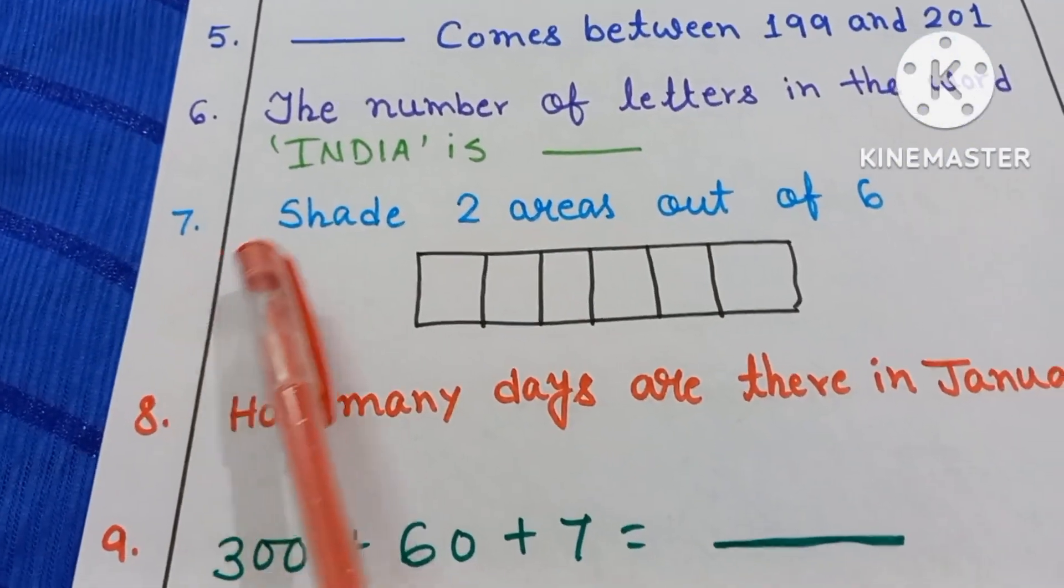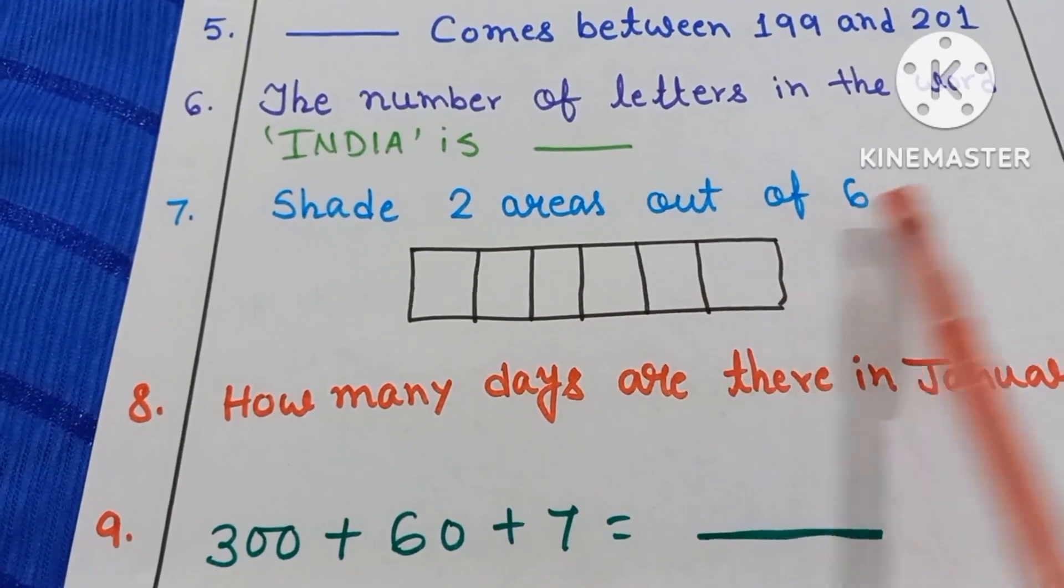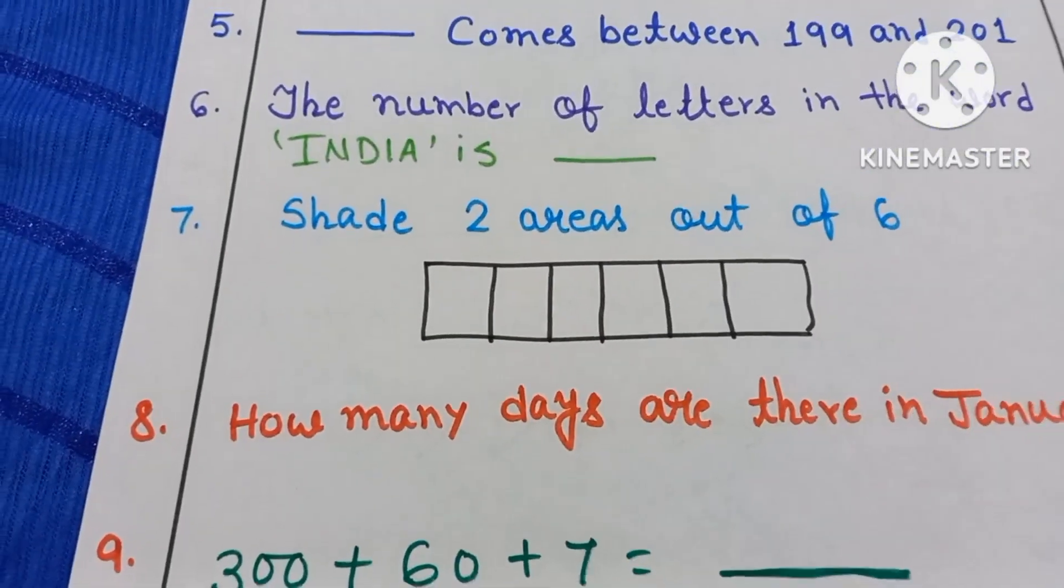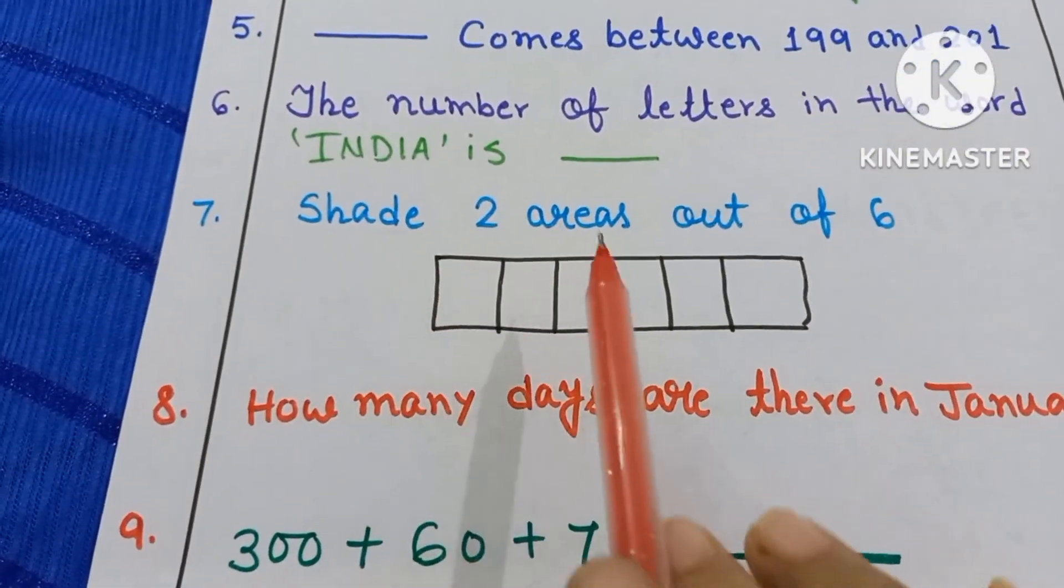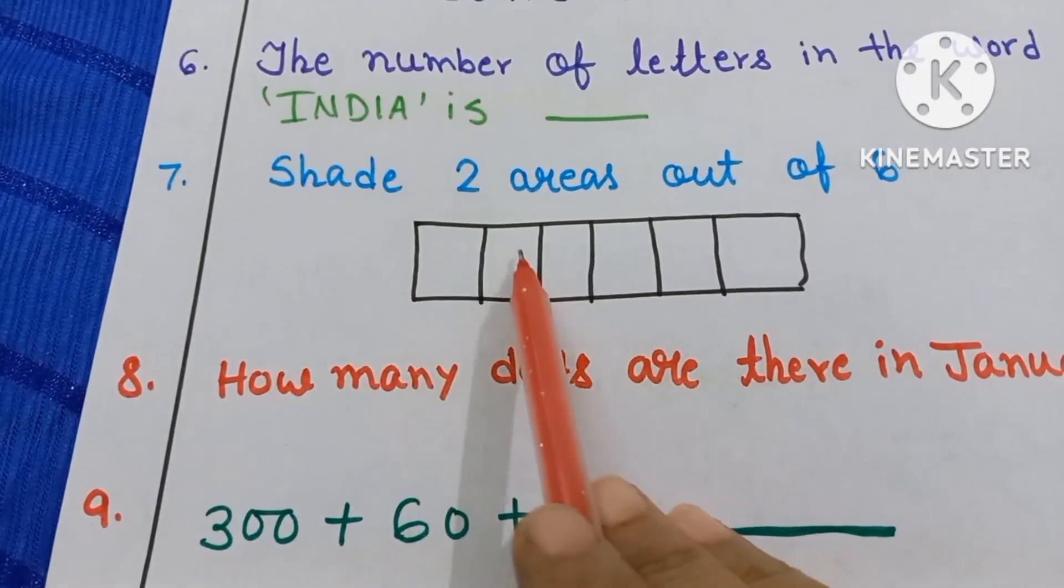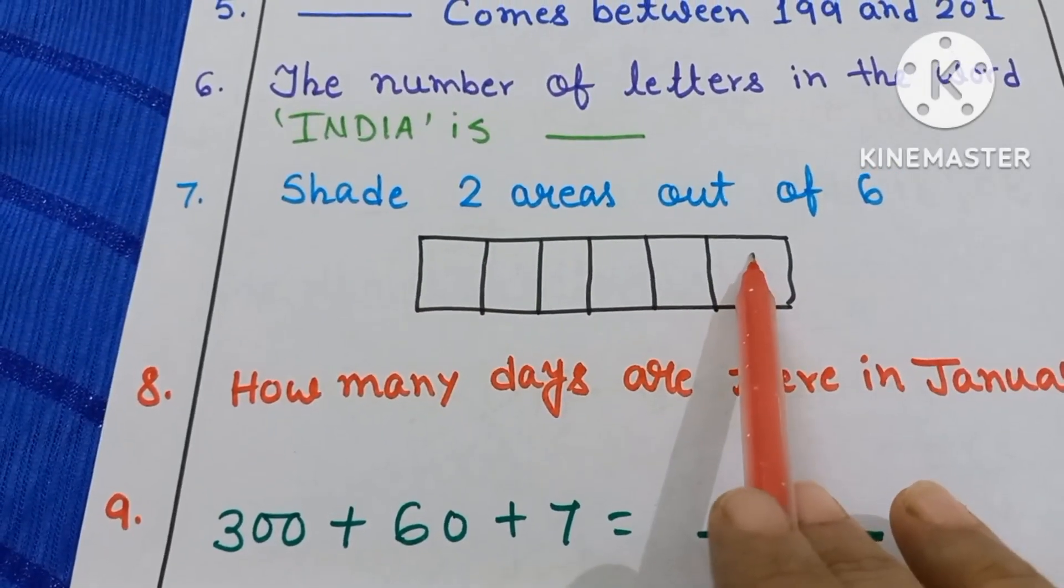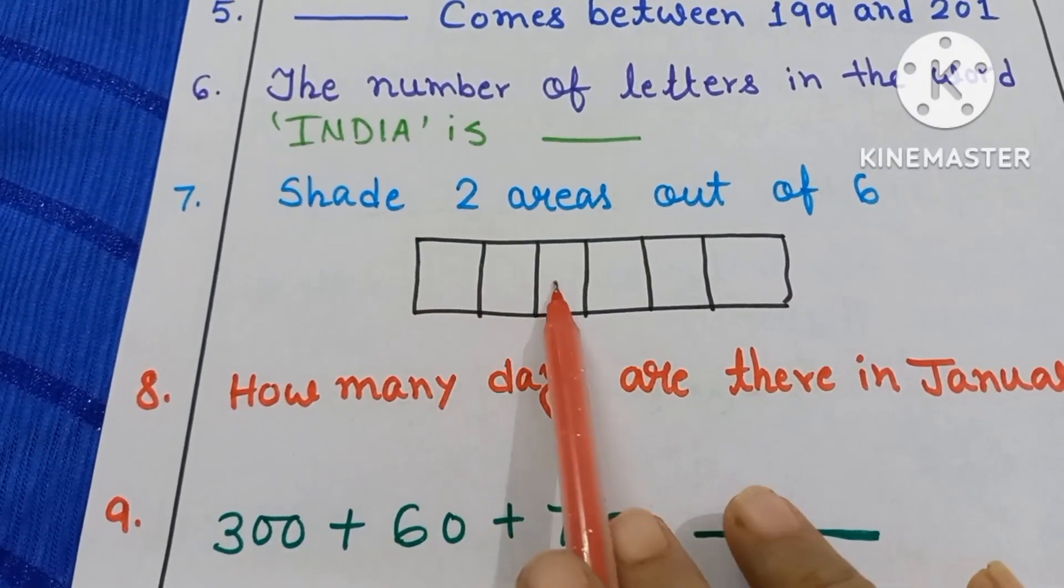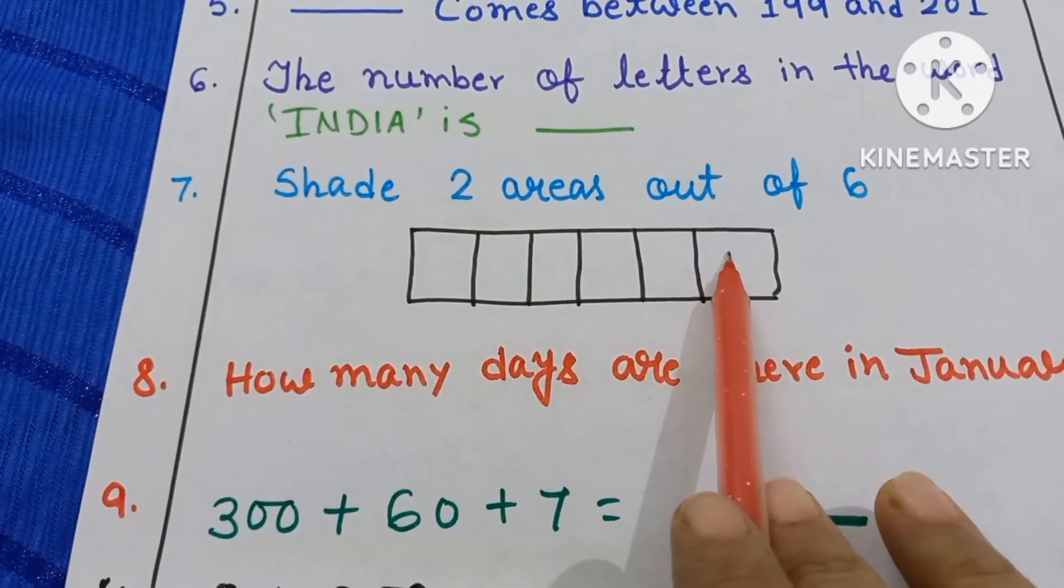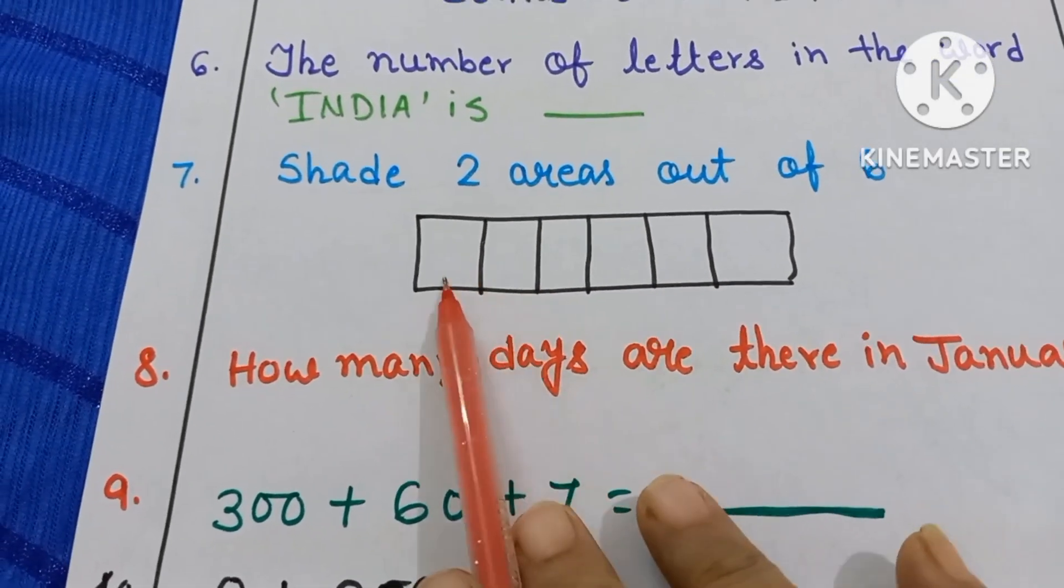Number 7. Shade 2 areas out of 6. How many areas you have to shade? 2. That means here and here. Because here I have given 1, 2, 3, 4, 5 and 6 boxes. So only 2 areas you have to shade. 1, 2.